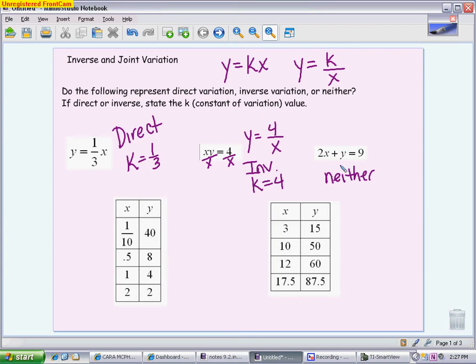To prove it, to prove an inverse relationship, if we take this equation and we get k by itself, inverse variation will always have the characteristic that if you multiply the columns, the x value and the y values, you should always get the same number, that k value. If that happens, it's inverse. So for the first one, if I multiply these together, 40 times 1/10, I get 4. 8 times 0.5 or 8 times 1/2, I get 4. 4 times 1, I get 4. 2 times 2, I get 4. So this is inverse variation, and my k value is 4.